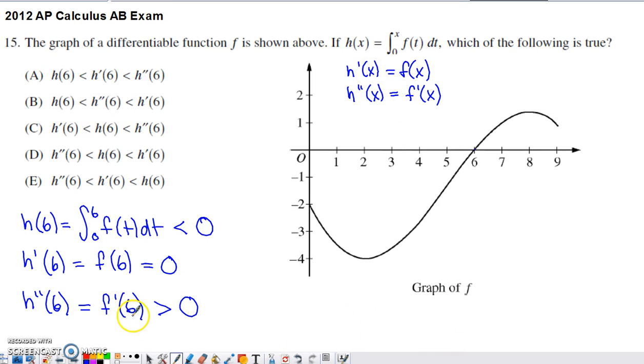For h double prime of 6, we need to realize that it's going to correspond to f prime of 6. Well, if this is a graph of f, we're going to look at the slope of the graph at 6 in order to find its derivative value at that spot.